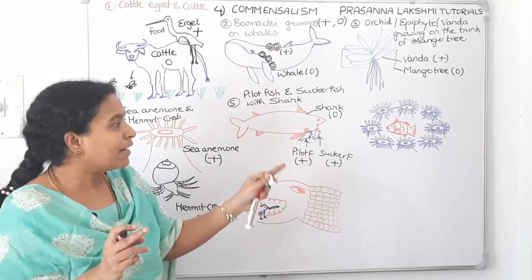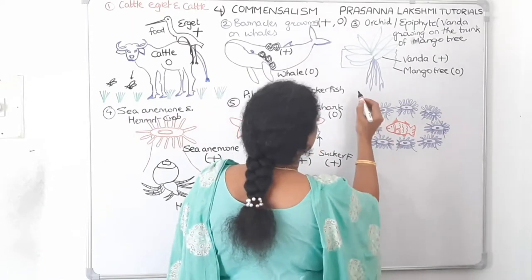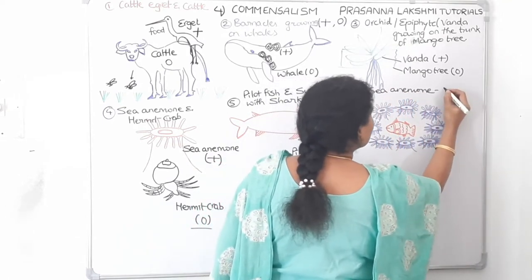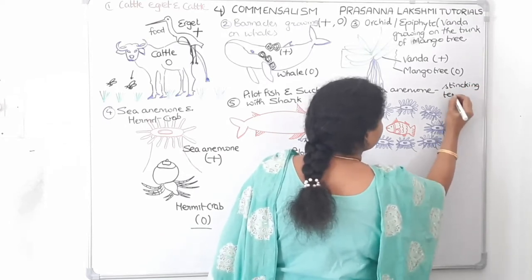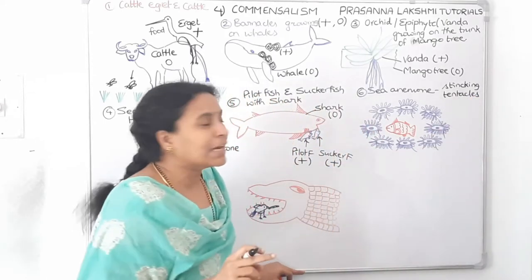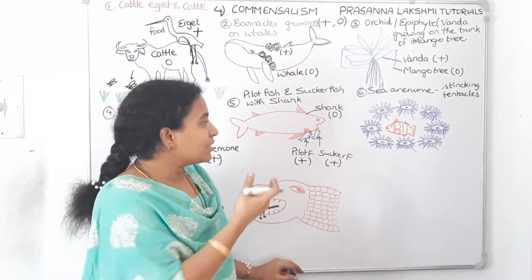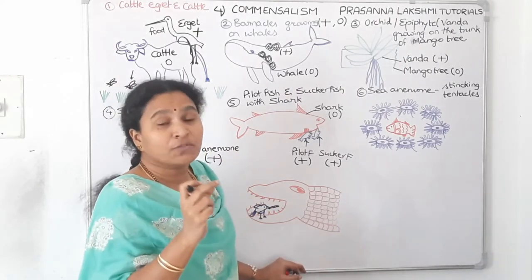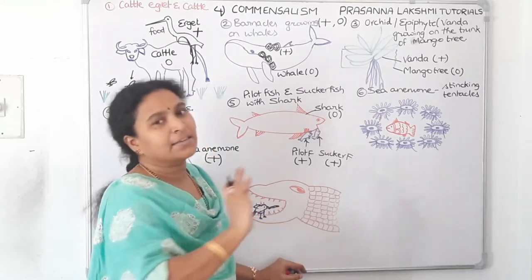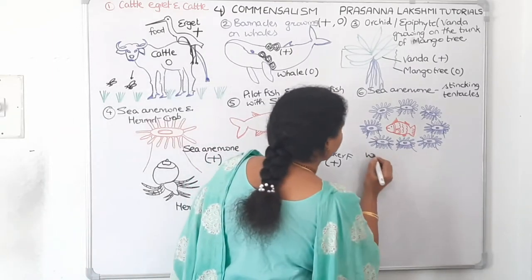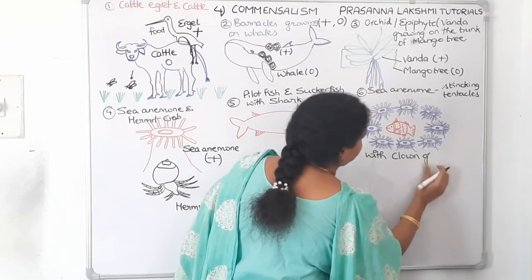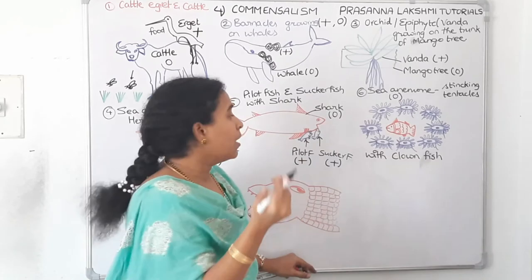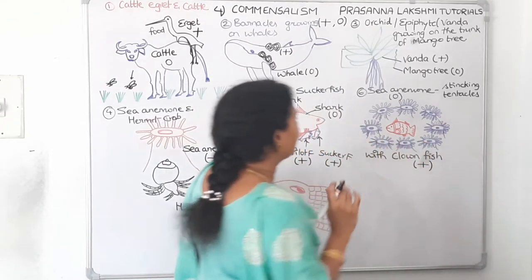The sixth example is sea anemone with clown fish. Sea anemone has stinging tentacles, and because of those tentacles predators will not come near it. The clown fish takes advantage of the stinging tentacles, makes the sea anemone its home and hides inside it so predators cannot find it. For sea anemone it is zero, but the clown fish is escaping from the predator — plus.